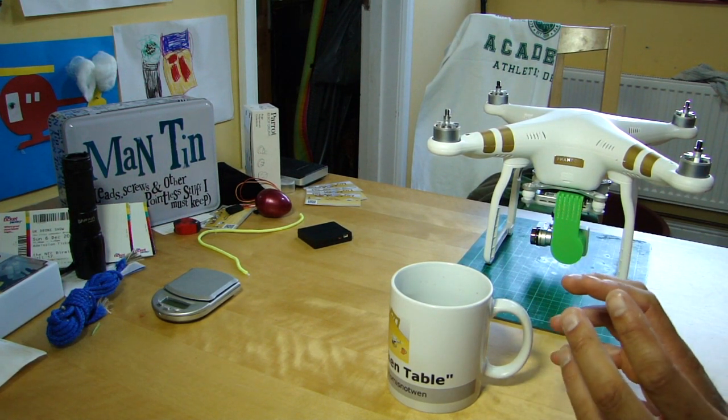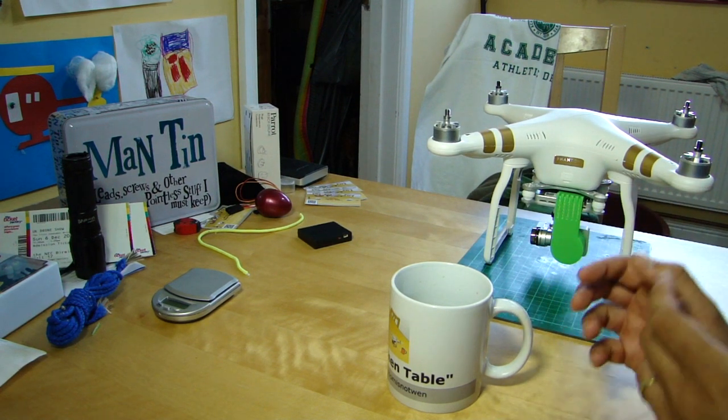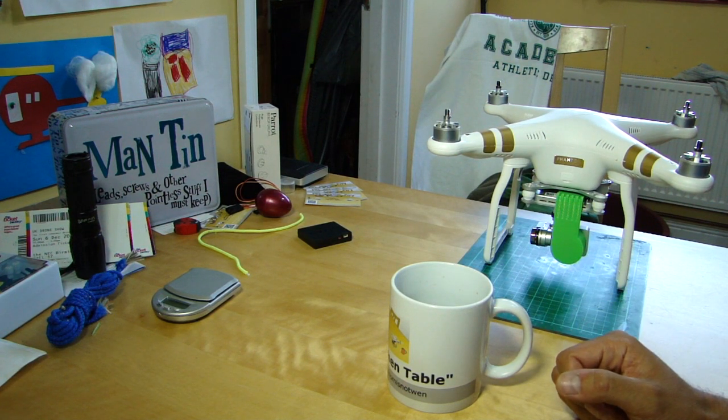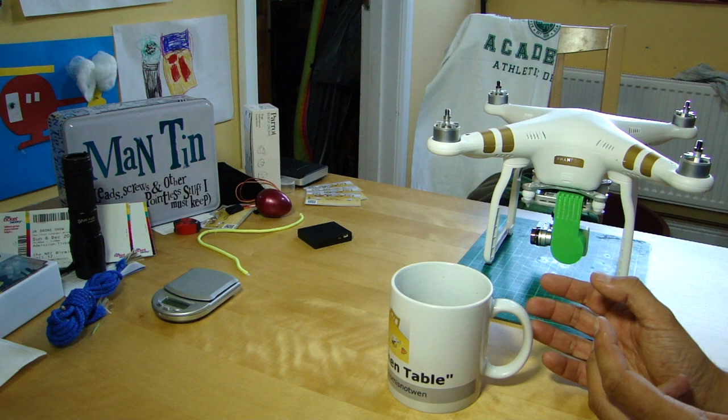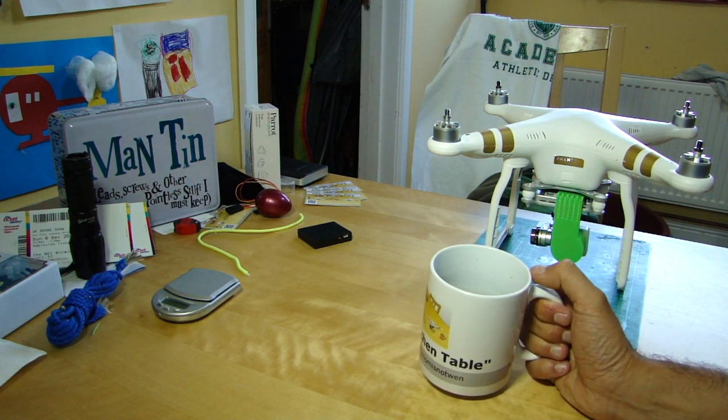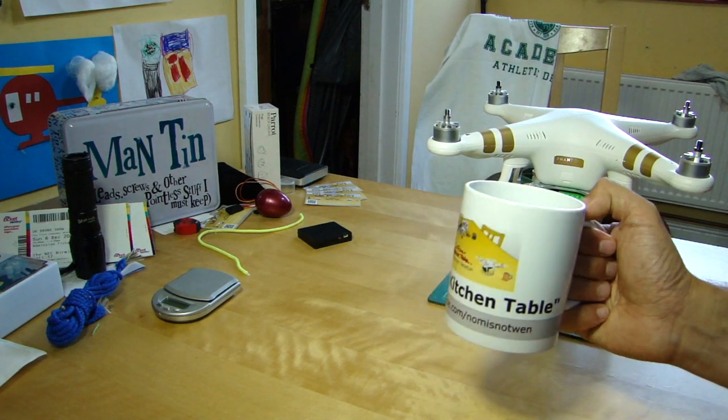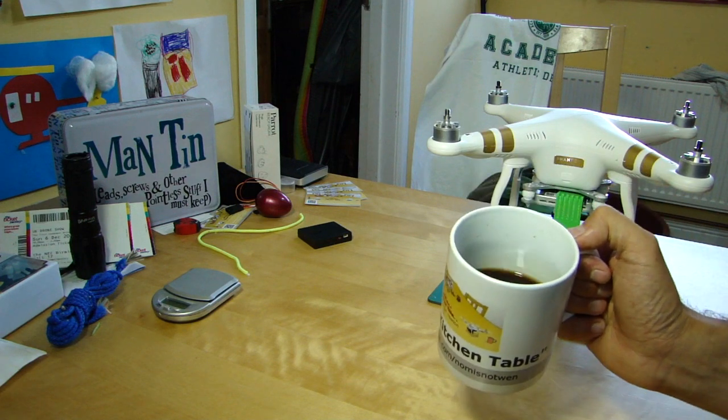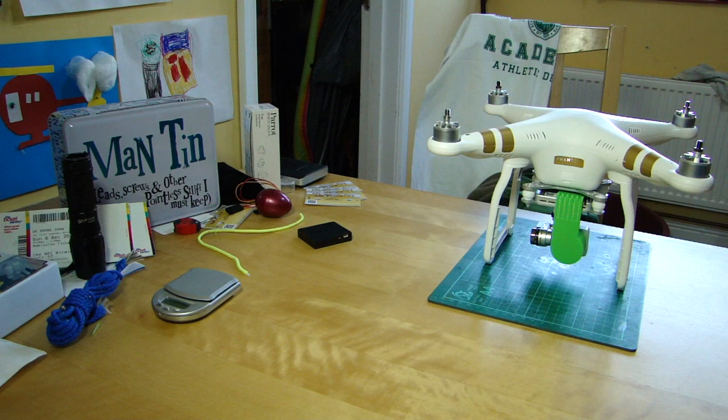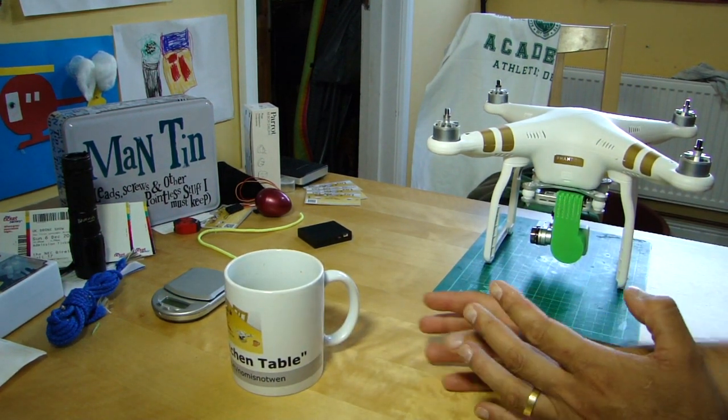We're looking at another couple of things that you might want to tweak to adjust the flight performance and the flight feel of the aircraft. But before we go any further, we must have a beverage when we're on the kitchen table discussing drones. Today we've gone back to coffee. I've got a lot on today and I need all the help I can get. So again, this is the home roasted Monsoon Malabar, black as nature intended. Cheers. Only the second of the day. Need another one soon.